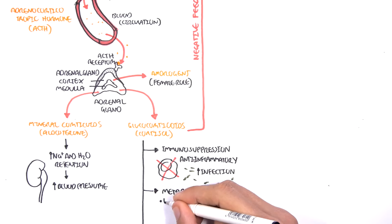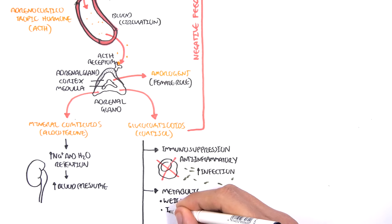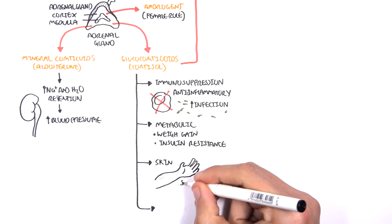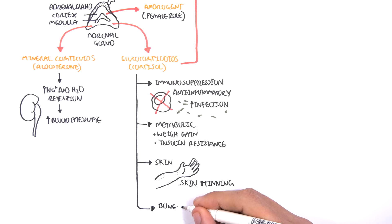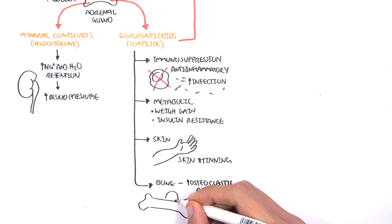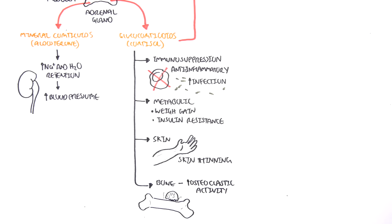Glucocorticoids have a profound effect on metabolism. They cause weight gain and insulin resistance. Glucocorticoids cause skin thinning, and in the bone, they stimulate osteoclastic activity, which are the bone-eating cells, resulting in an increase in osteopenia and osteoporosis — bones with low mineral density — increasing the risk of bone fractures. Finally, cortisol itself has an effect on blood pressure, which will increase blood pressure.